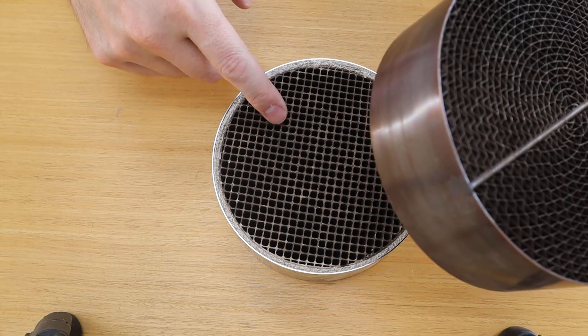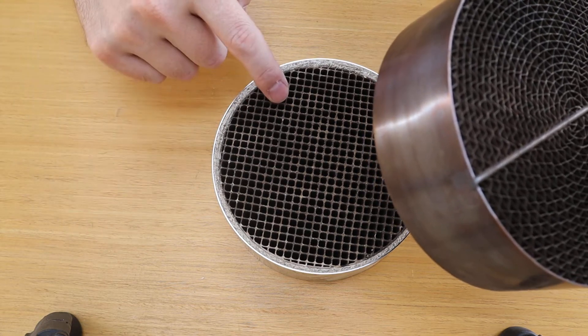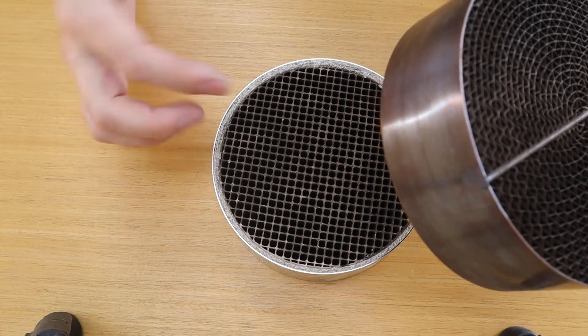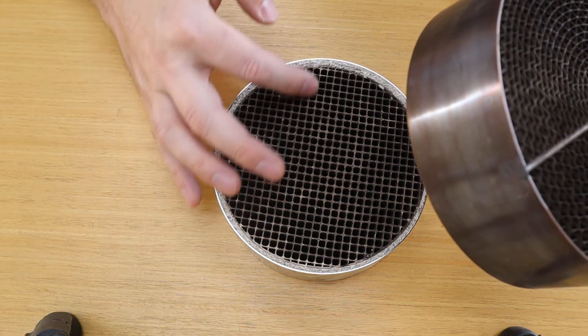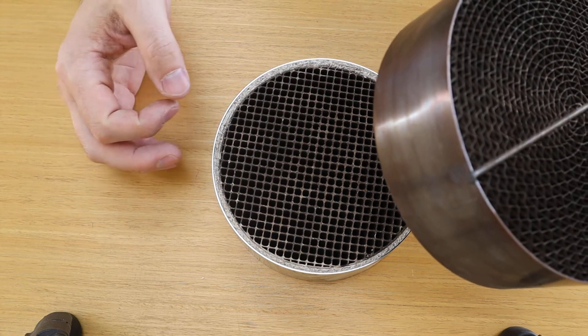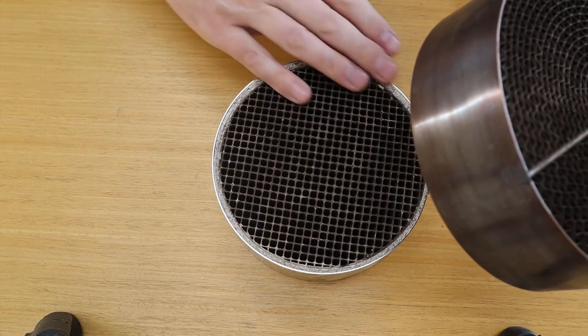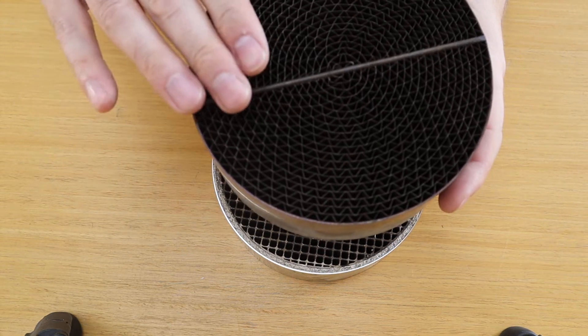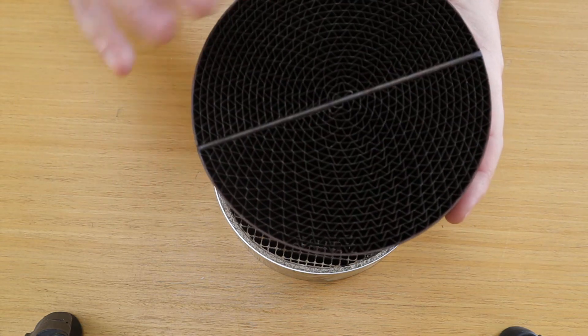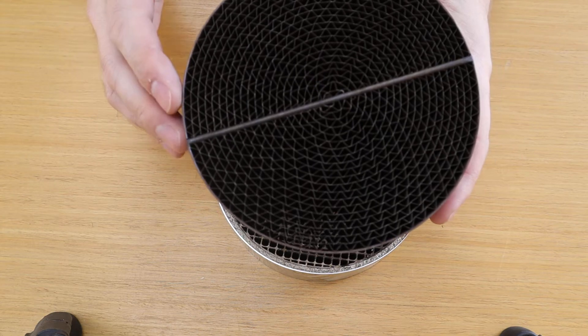The ceramic combustor, because it's made of ceramic, needs thicker cell walls to stay intact. This results in a little bit more frontal surface area compared to the metal combustor, which has less frontal surface area.